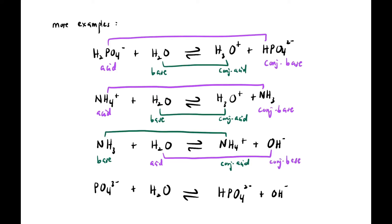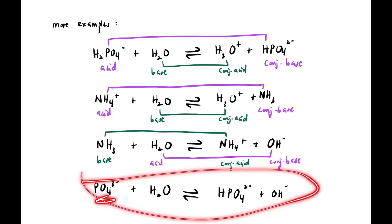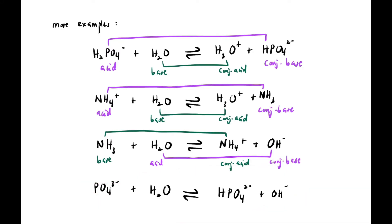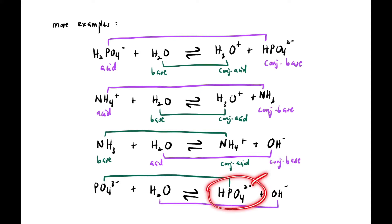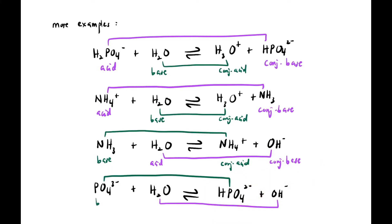In the same equation, H₂O with OH⁻: H₂O is the acid and OH⁻ is its conjugate base. For the last example: PO₄³⁻ + H₂O ⇌ HPO₄²⁻ + OH⁻. HPO₄²⁻ has an extra H⁺ so it is the conjugate acid and PO₄³⁻ is the base. H₂O is the acid and OH⁻ is its conjugate base.